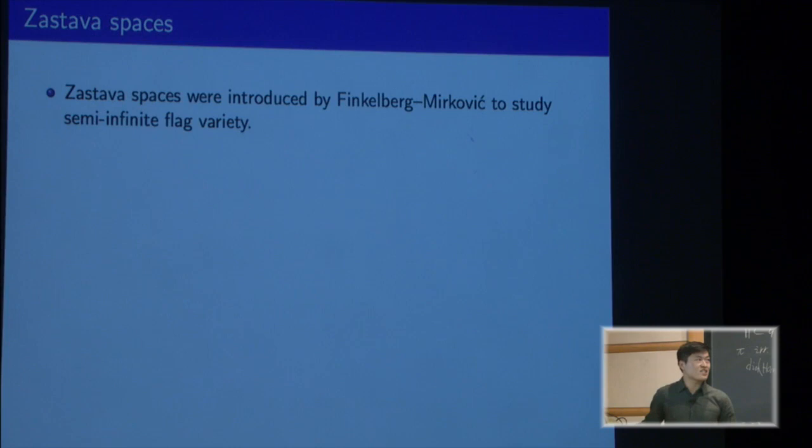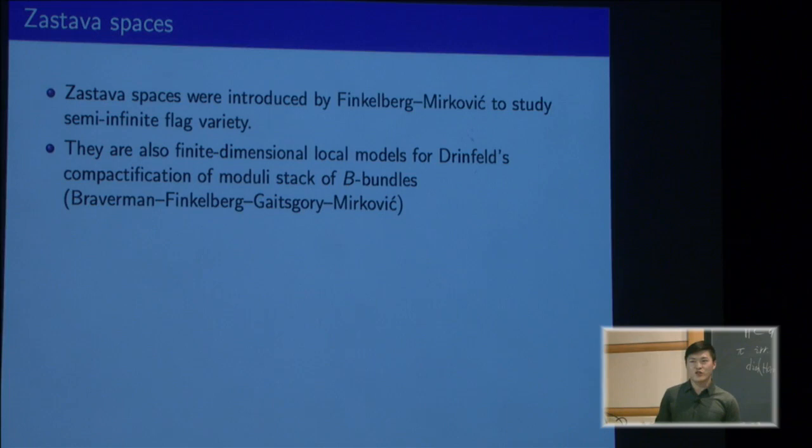Now I want to relate this sequence of numbers to Zastava spaces. I'm not really going to define Zastava spaces because it gets kind of technical. These are some finite dimensional algebraic varieties which were first introduced by Finkelberg and Mirković to study semi-infinite flag varieties. They have a lot of good properties, but one of the main ones is that they're finite dimensional and they're just algebraic varieties.